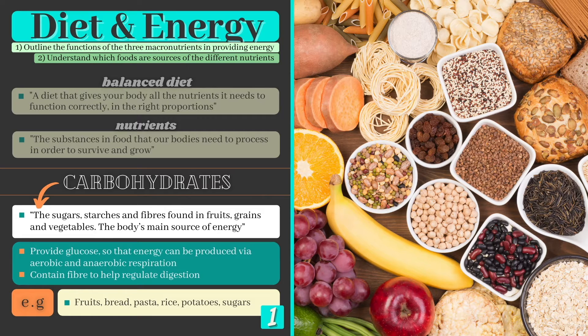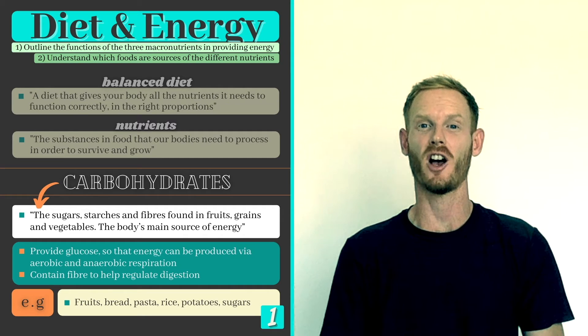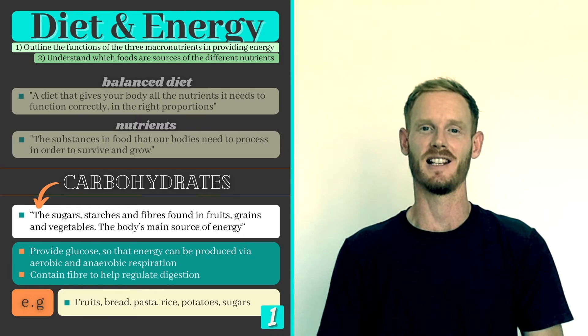They are found in foods such as fruits, bread, pasta, rice, potatoes and anything that contains sugar. Carbohydrate sources often contain fiber as well which is the indigestible substance that helps to regulate digestion.